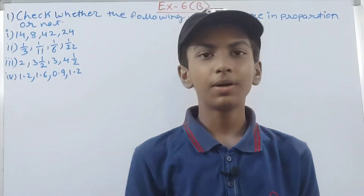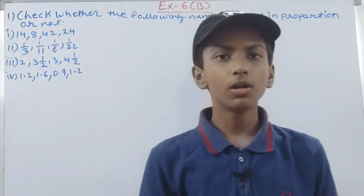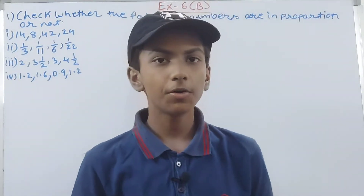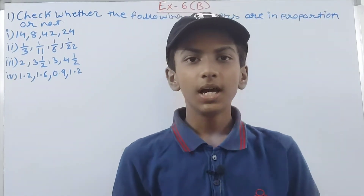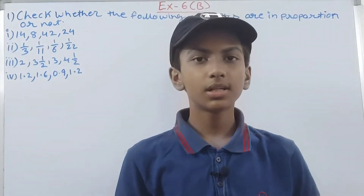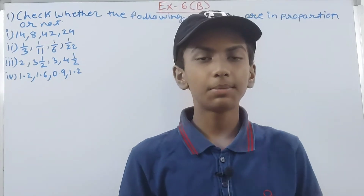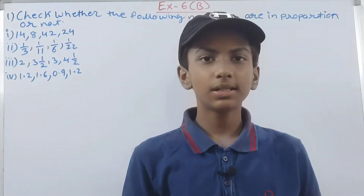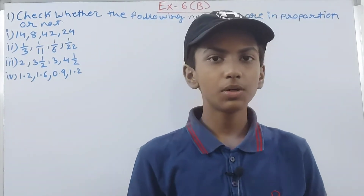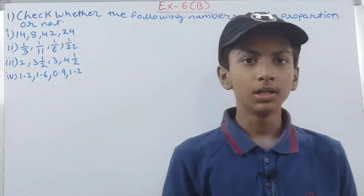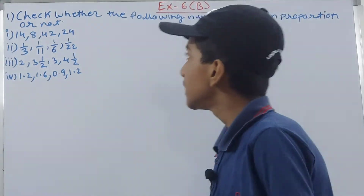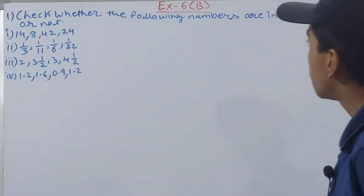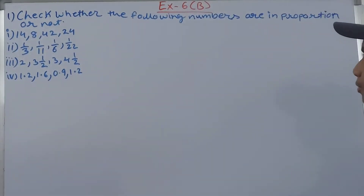Hello friends, welcome back to my YouTube channel. In this video we are going to solve ICSE Mathematics class 7, chapter 6, Ratio and Proportion, exercise 6B, question number 1. The question asks us to check whether the following numbers are in proportion or not.